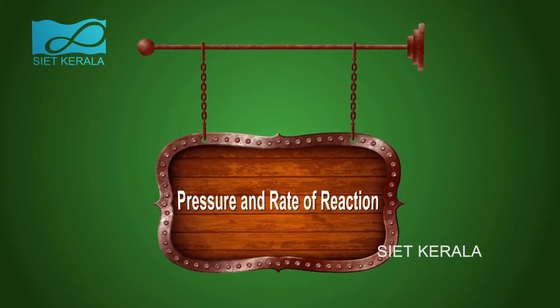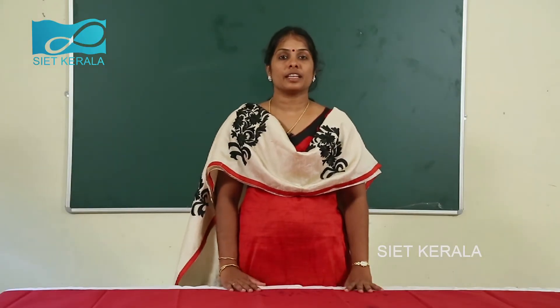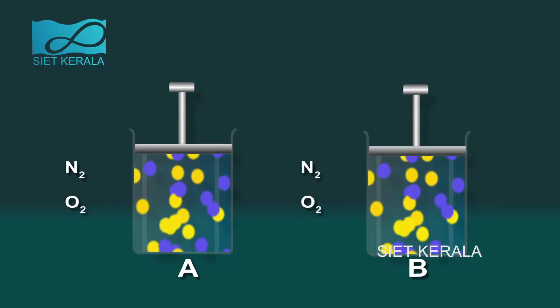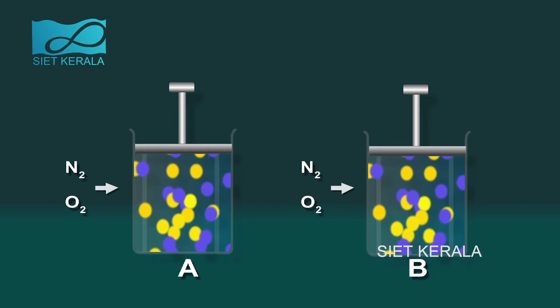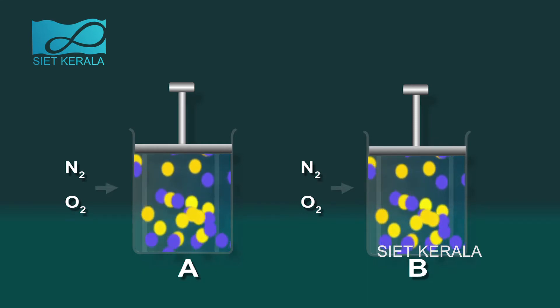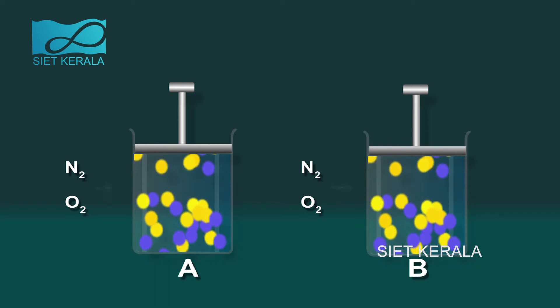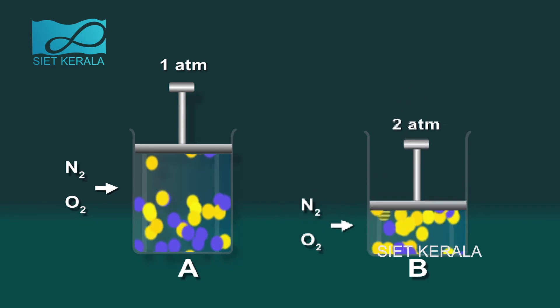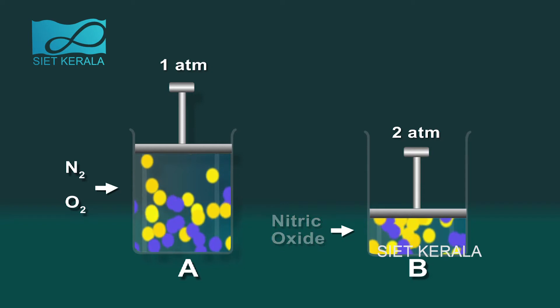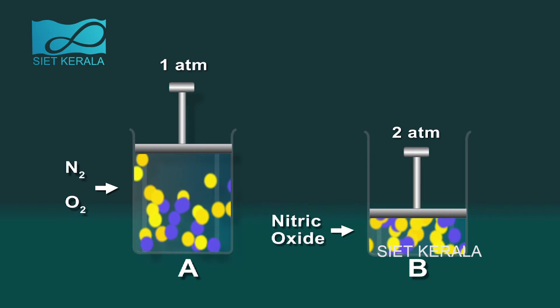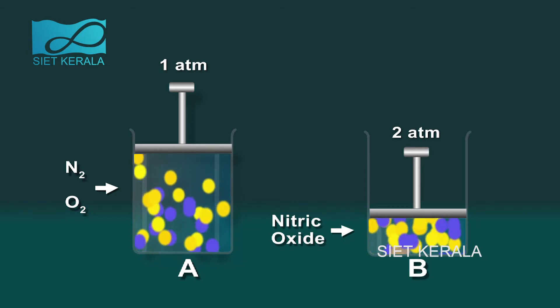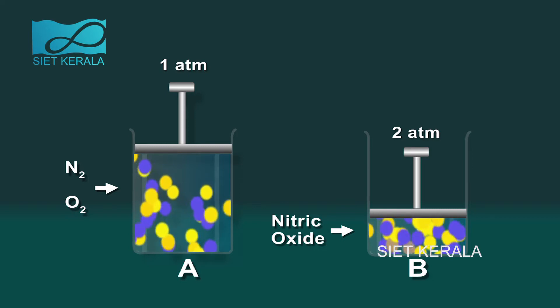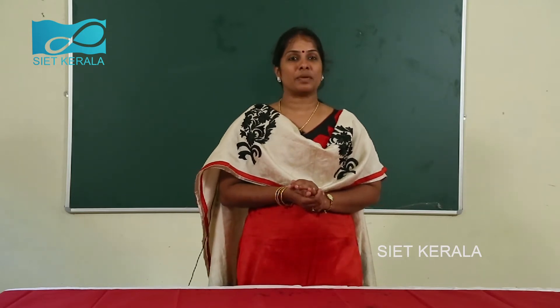Pressure and reaction rate. The influence of pressure is more on the reaction rate of gases. Take two cylinders and fill them with nitrogen and hydrogen. Increase the pressure of one cylinder using a piston. We can see the reaction takes place faster and forms ammonia. Pressure has a major role in the industrial preparation of compounds. When pressure is increased in a chemical reaction involving gases, the number of molecules present in unit volume increases, the rate of collision increases, and hence the rate of chemical reaction increases.